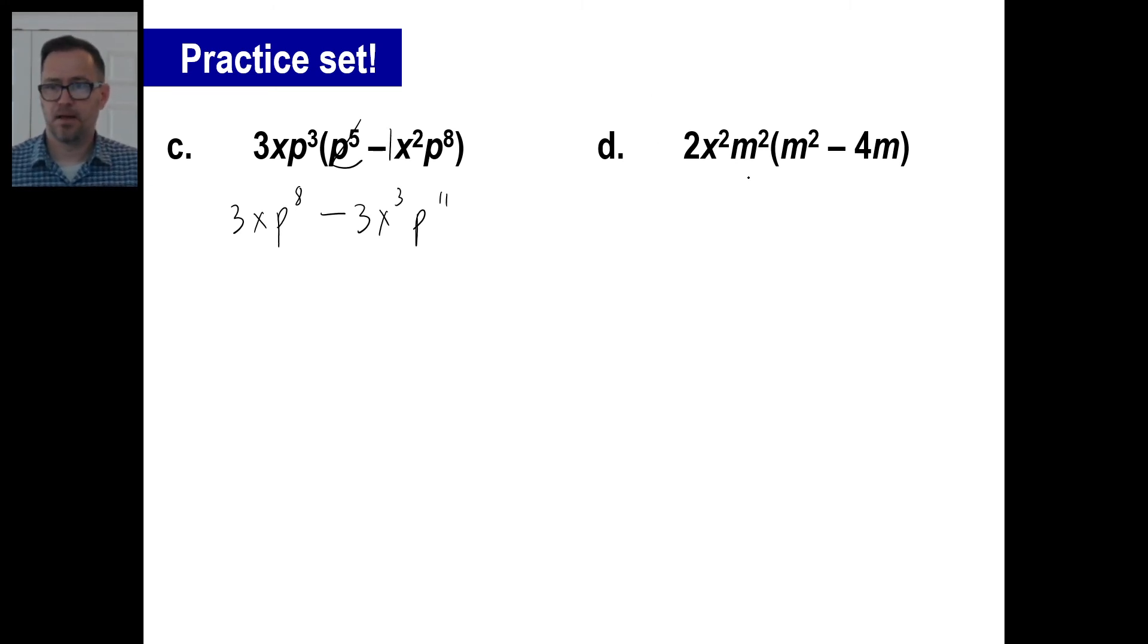Look at D. Let's do this one first. A two times a one is a two. X squared has nothing to go along with. M squared times M squared is M to the two plus two. Done. All right. A positive times a negative is a negative. Two times a four is an eight. X squared has, again, nothing to go along with, so just X squared. M to the second times M to the first is M to the third. And there we go. That's it.